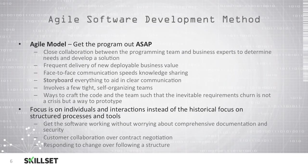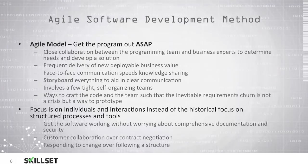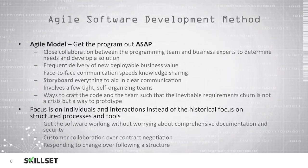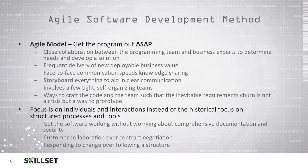The agile model focuses on getting the program up and running as soon as possible. This model requires close collaboration between business experts and your programming team in order to determine the needs and develop a solution. Frequently, you will be delivering new deployable business value and you'll have face-to-face communication to speed up the knowledge sharing process. The agile model uses a storyboard to increase communications and involves a few tight, self-organizing teams. The agile model also provides ways to craft code and your teams so that your inevitable requirements churn is not a crisis, but a way to prototype. The focus here is on individuals and interactions rather than a historical focus on structured processes and tools.